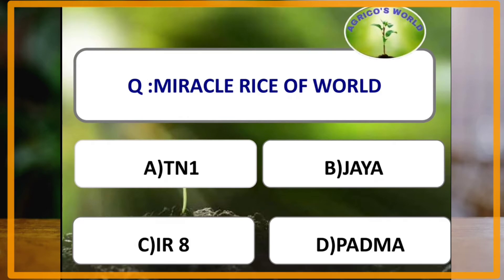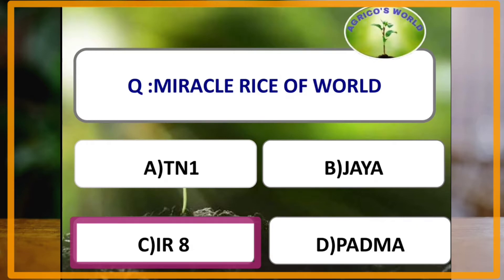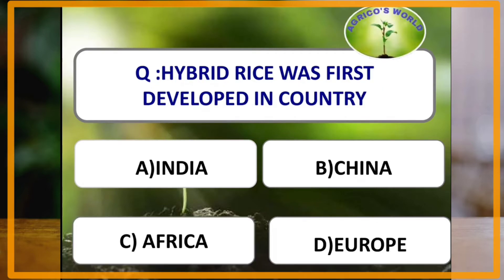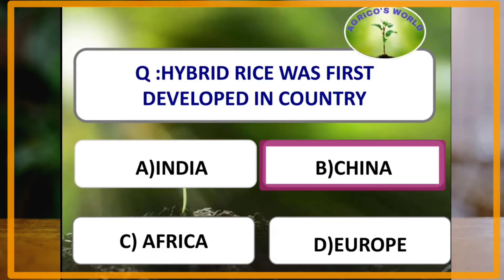What is the miracle rice of the world? The miracle rice of the world is IR8, which is a high-yielding semi-dwarf rice variety released from the International Rice Research Institute, Philippines. The miracle rice of India is Jaya. Hybrid rice was first developed in China, and later in India as well. The father of hybrid rice is Yuan Longping.